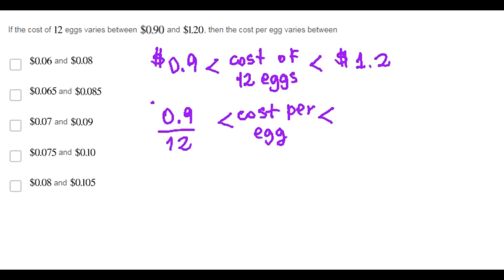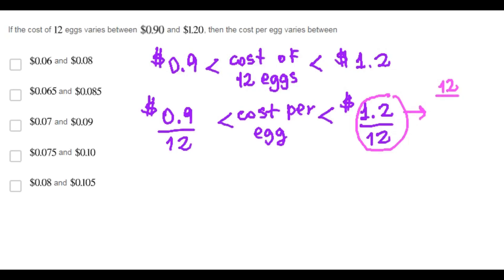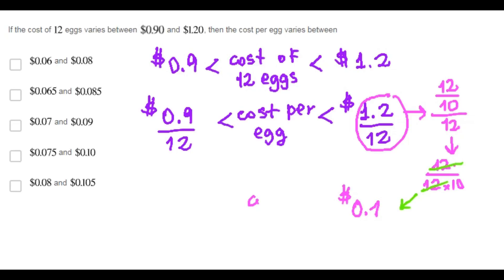This can be written as 0.90 over 12 and 1.20 over 12. We simplify: 1.20 over 12 equals 12 over 12 times 10, we can cancel, giving 1 over 10, which is $0.10. So the cost per egg varies between $0.10 and 0.90 over 12 dollars.